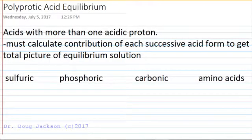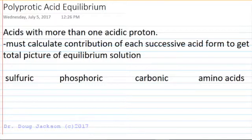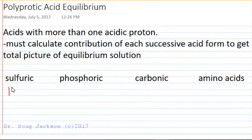Polyprotic acids are acids with more than one acidic proton. For each of these, when we're developing an equilibrium, we must calculate the contribution of each successive acid form to get the total picture of what our equilibrium solution looks like. Just a few of these that are common that we've seen.